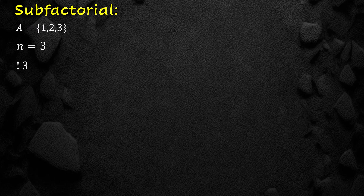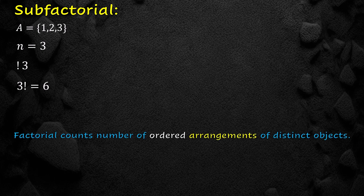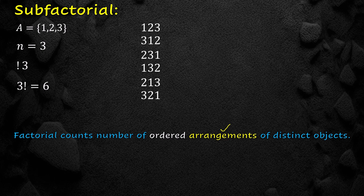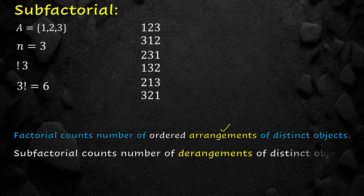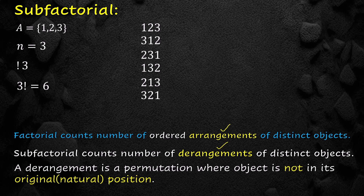To find the sub-factorial we shall make use of the factorial function. As we know, factorial of 3 is equal to 6. Factorial counts the number of ordered arrangements of distinct objects. Let's write down all arrangements: 1 2 3, 3 1 2, 2 3 1, 1 3 2, 2 1 3, 3 2 1. Now sub-factorial counts the number of derangements of distinct objects.